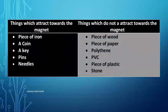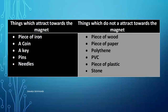Things which attract toward the magnet include pieces of iron, a coin, a key, pins, and needles. Things which do not attract toward the magnet include pieces of wood, pieces of paper, PVC, pieces of plastic, and stone. Through this activity we can understand that some materials get attracted towards the magnet while some others do not.